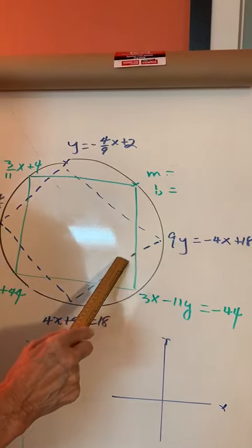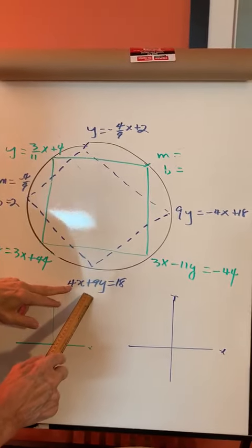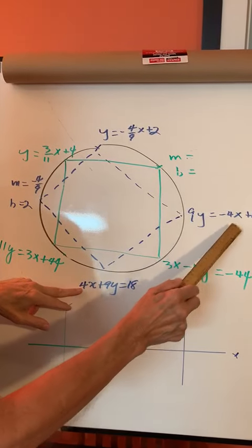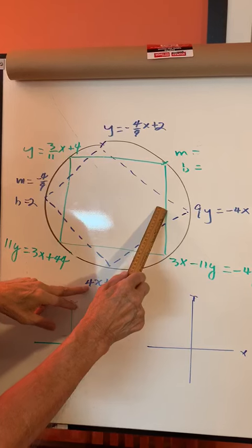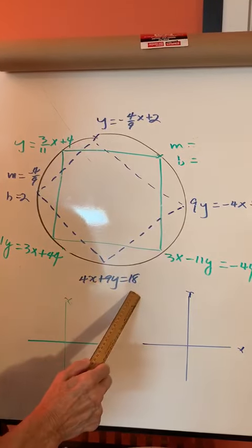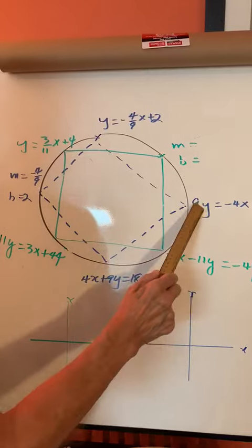Let's follow it over here. This is still the same line. What I've done is transposed the 4x and put it over here, left the 9y there, and left the 18 where it is. This is the same as this.